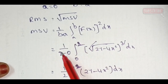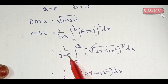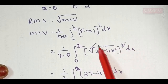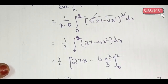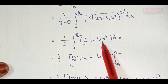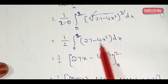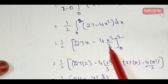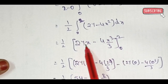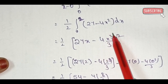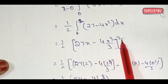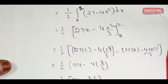With b = 2 and a = 0: 1 by (2 minus 0), integral from 0 to 2 of (√(27 − 4x²))² dx — the square root cancels. So 1/2 times integral from 0 to 2 of (27 − 4x²) dx. Integration gives 27x − 4x³/3, with limits 0 to 2.